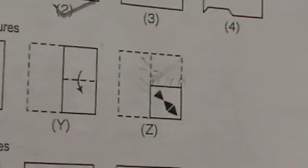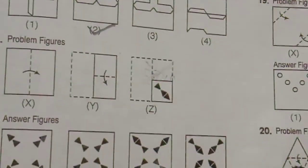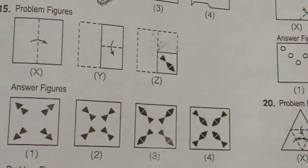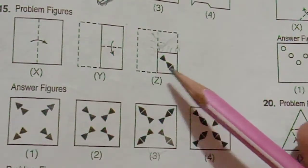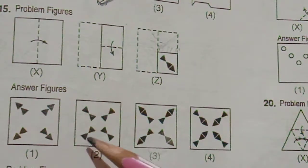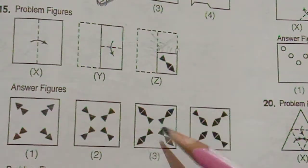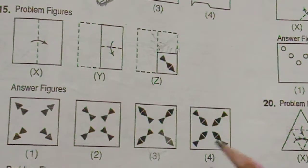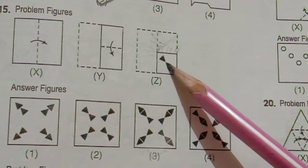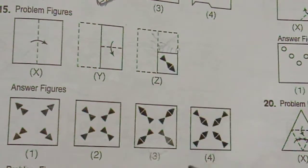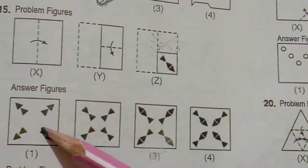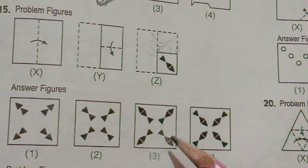So what will be the answer? You can see in the same part — only three triangles are there. But in the first option there are only two triangles, and in the second also only two triangles. So in the third and fourth there are three triangles. The difference is that this triangle is in the opposite direction on the last side — not here. So the first and second are wrong, and this one is also wrong. The third one is the right answer.